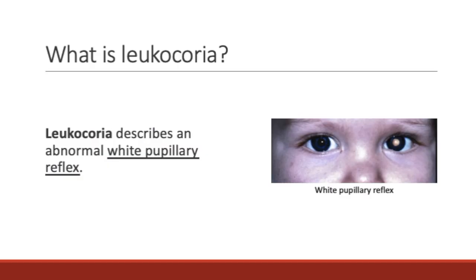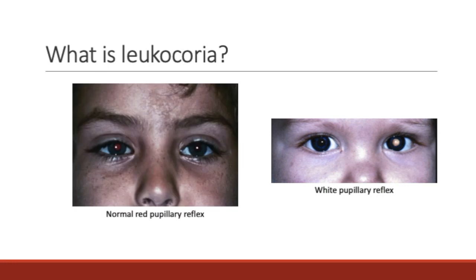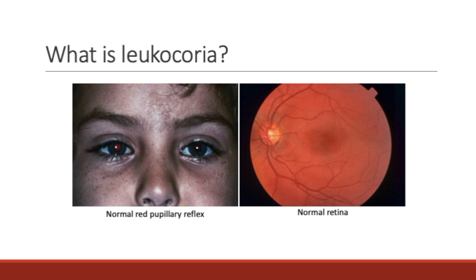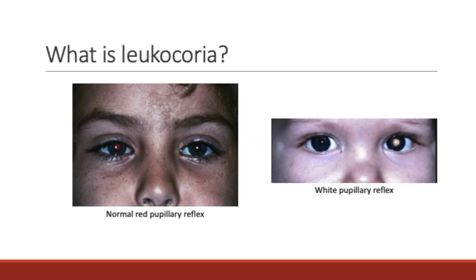First, let's define leukocoria. Leukocoria describes an abnormal white pupillary reflex when we shine light into the pupil. Normally, shining light into the eye should produce a red pupillary reflex, as seen in the left picture. This is because the retina appears red in color due to the vascular layer underneath. Therefore, when we see a white reflex, this warrants further investigation.